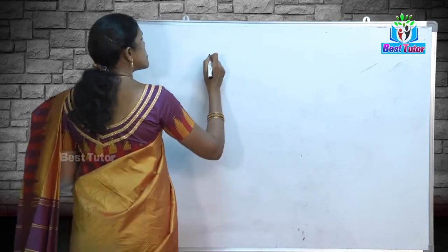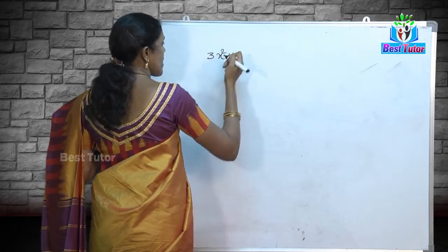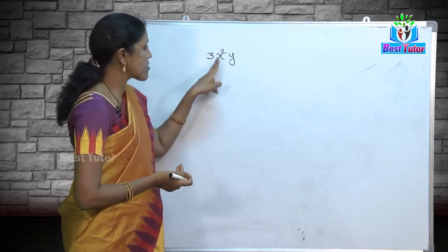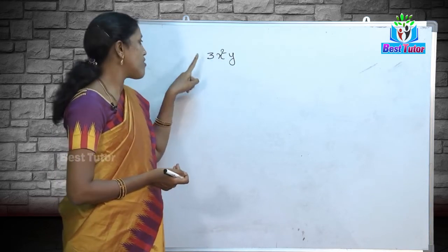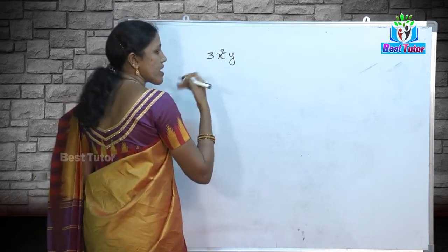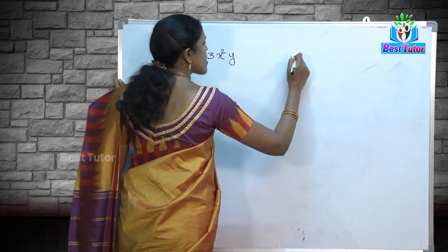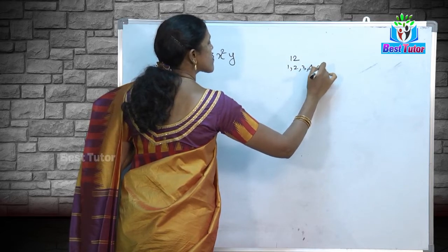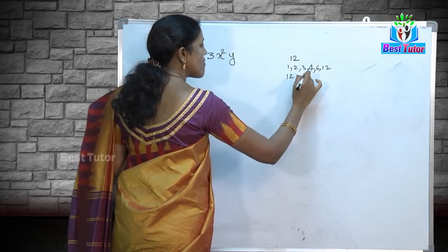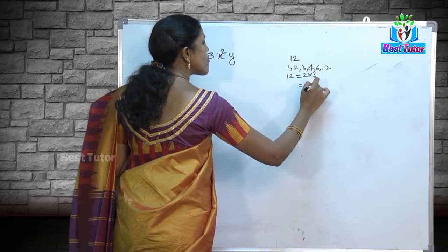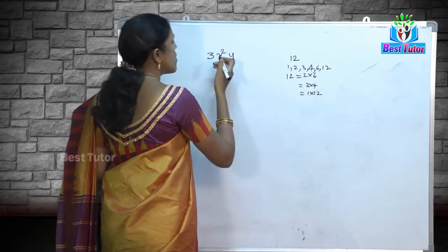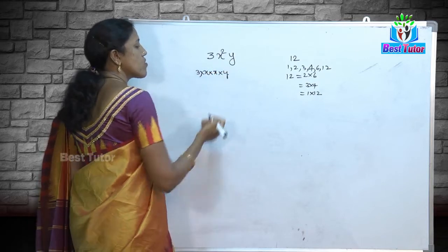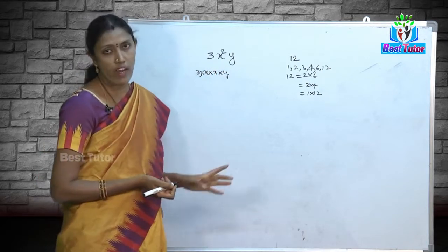Let me choose the term 3x²y. Is it a term? Yes — I have picked up the constant 3 and variables x, x, and y, multiplied together. Just as the factors of 12 are 1, 2, 3, 4, 6, and 12, the factors of 3x²y are 3, x, and y.